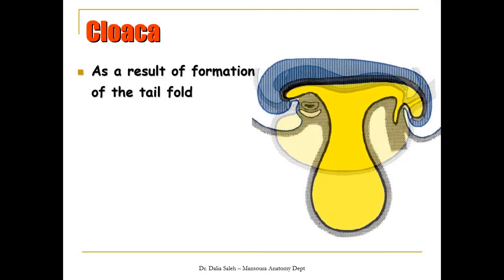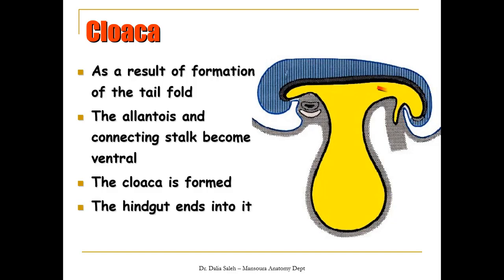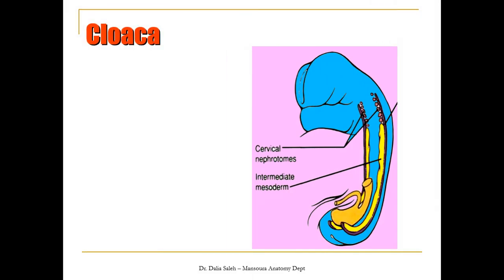As a result of folding of the embryo in a cranio-caudal direction and the formation of the tail fold, both the allantois and the connecting stalk will move ventrally. Thus the cloaca will form, and the hindgut, which is derived from the yolk sac, will terminate at the cloaca. In this view we can see the hindgut, the cloaca, the allantois, and on each side from the intermediate mesoderm the kidneys at their different stages of development.